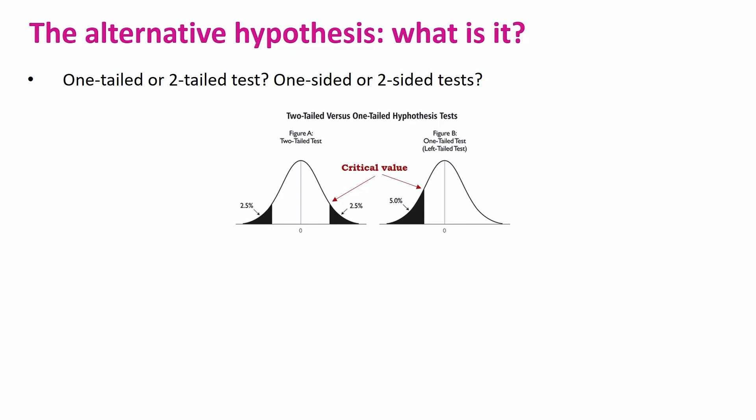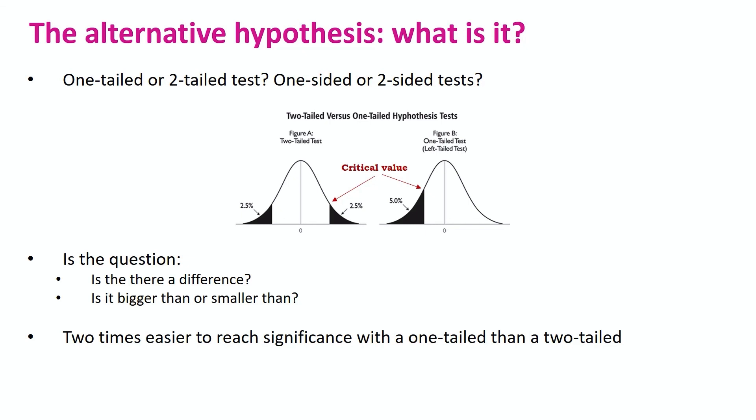It is really about the question we are asking. If it is, is there a difference? Then we look at either side of the distribution, and we split the rejection region in two, and we have 2.5 percent on either side. Or, we ask, is it bigger or smaller? In which case, we look only at one side. Now, if we look at these two graphs, we can notice that the critical values are different between the two approaches. For the one-tailed test, the critical value is closer to zero than for the two-tailed one, which means that a smaller difference will be significant. So, the choice of a version of the test will affect directly the likelihood of reaching significance. In fact, with the same data, it is two times easier to reach significance with a one-tailed test than a two-tailed one.